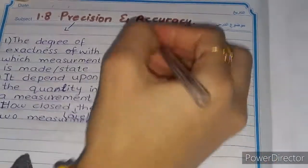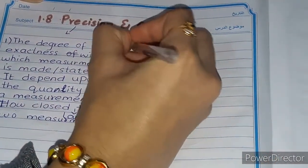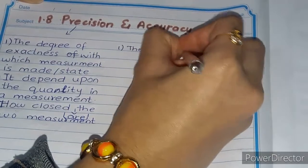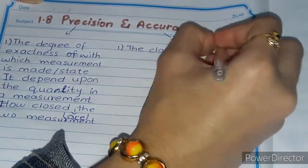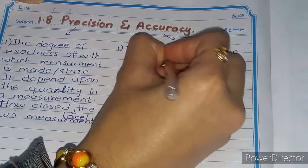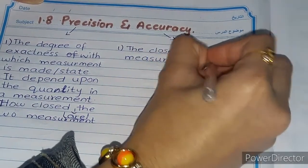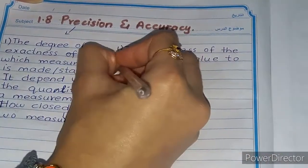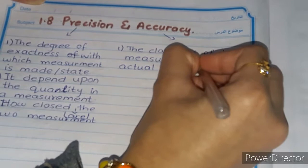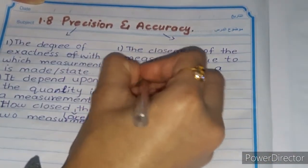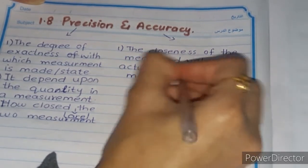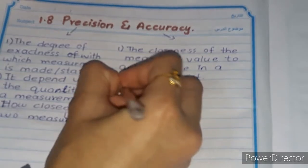Now for accuracy — accuracy is the closeness of the measured value to the actual value in a measurement. Point number two: it depends upon the percentage or fractional uncertainty.